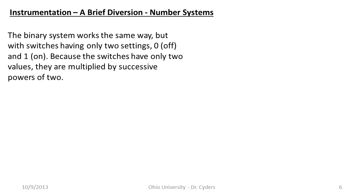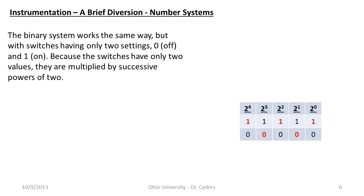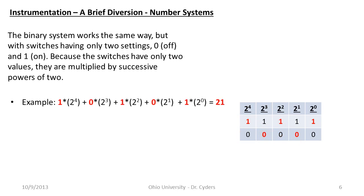The binary system works the exact same way, except the switches only have two settings: off and on. This is useful because transistors are switches — they can be made very tiny and easily controlled by a computer. Computer processors and memory banks are essentially transistors. The standard language is binary: 0 and 1 only. The switches are multiplied by successive powers of 2 instead of 10. For example, 1×2⁰ + 0×2¹ + 1×2² + 0×2³ + 1×2⁴ = 1 + 0 + 4 + 0 + 16 = 21 in decimal, which is written 10101 in binary.